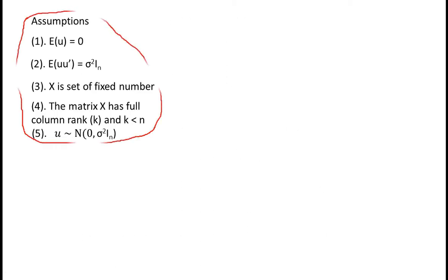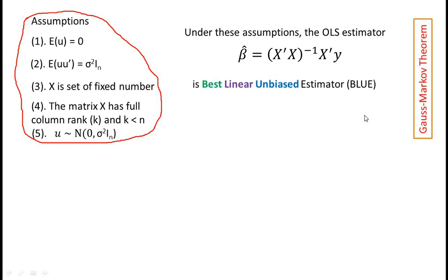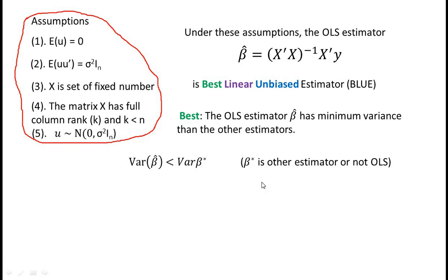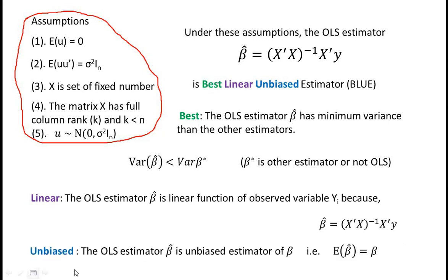Under these assumptions, the OLS estimator β̂ is the Best Linear Unbiased Estimator (BLUE). Best in the sense that the OLS estimator β̂ has minimum variance compared to other estimators, i.e., Var(β̂) < Var(β*) where β* is any other estimator. Linear in the sense that β̂ is a linear function of observed variables y_i, because β̂ = (X'X)⁻¹X'y. Unbiased in the sense that E(β̂) = β.